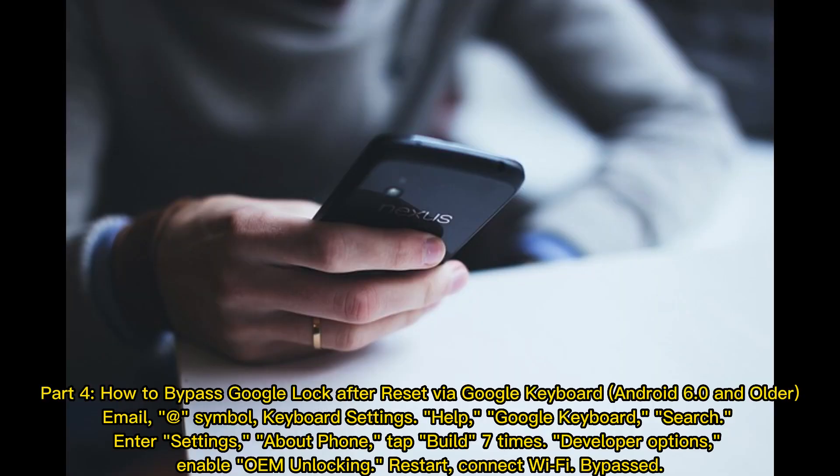Part 4: How to bypass Google lock after reset via Google Keyboard on Android 6.0 and older. Enter an email with the at symbol to open keyboard settings, then tap Help and Google Keyboard. Search and enter Settings, then About Phone. Tap Build Number 7 times to enable Developer Options, then enable OEM Unlock and restart. Connect to Wi-Fi — bypassed.